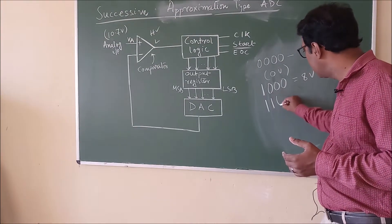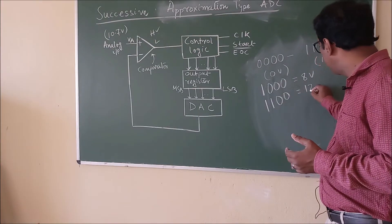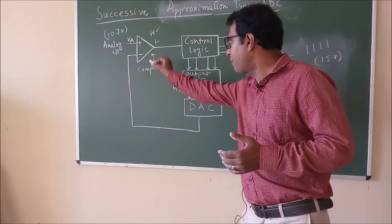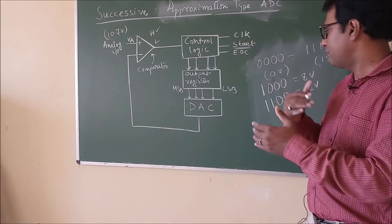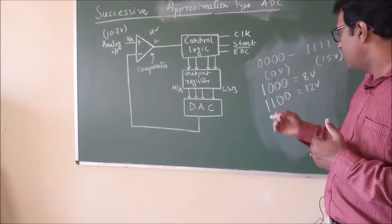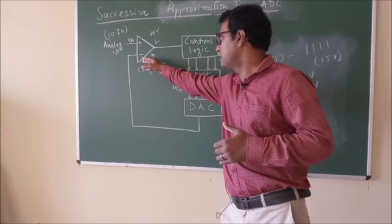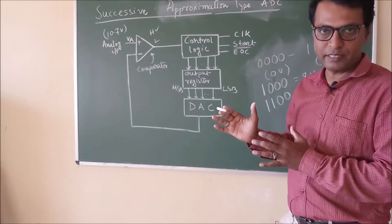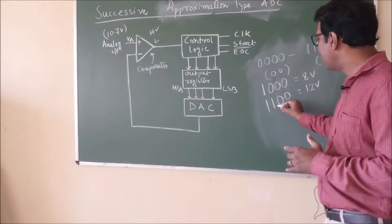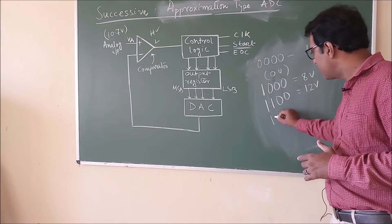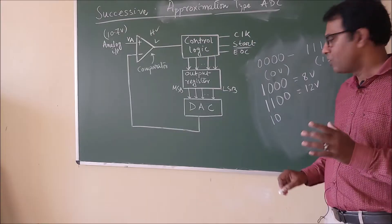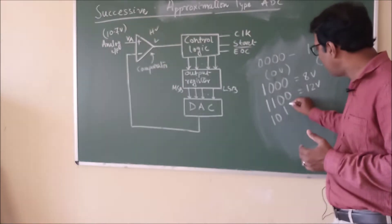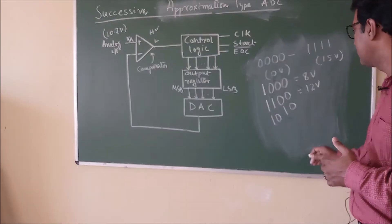After giving another clock pulse, the next bit is changed, making it 1100. Now 1100 means 12 volts; it is converted by the DAC and applied to the comparator. So 10.7V and 12V are compared and the DAC output is found to be high — it is applied at the inverting terminal, so the comparator provides a low output. Low output means the control logic clears that bit, resetting it. Now it is 1010 and the third bit is set after the next clock pulse.